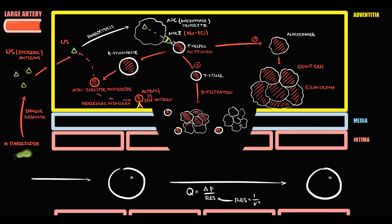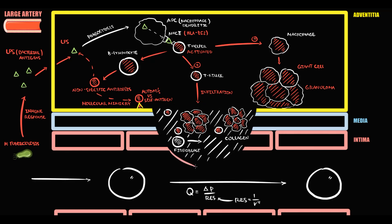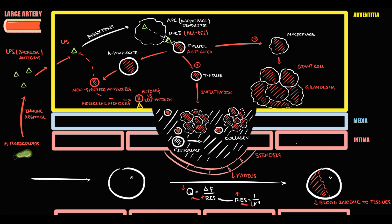Severe inflammation causes destruction within the arterial wall. To maintain the integrity of the arterial wall, fibroblasts respond by producing a massive amount of collagen to fill the empty space. With deposition of collagen, the vessel becomes more narrow and stiff. Local accumulation of collagen within the arterial wall causes stenosis. With stenosis, the radius of the artery decreases; with decreasing radius, resistance increases; and with increasing resistance, blood flow decreases. This results in decreased blood supply to tissues. The most common problem in Takayasu Arteritis is stenosis of the large artery.